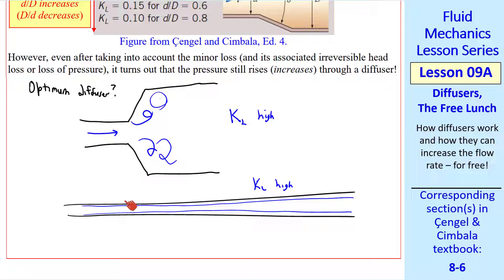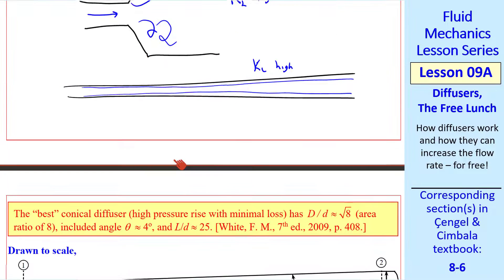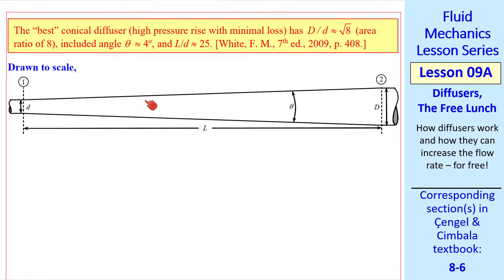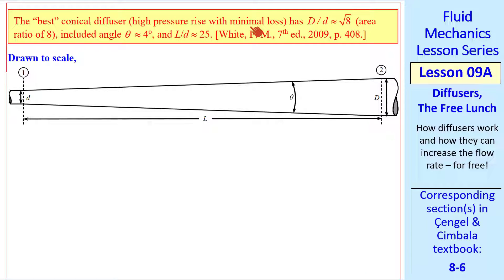Somewhere in between these two extremes will be the optimum diffuser. It turns out that the best conical diffuser, in other words the highest pressure rise with the minimal loss, has capital D over D of about square root of 8, or an area ratio of 8.